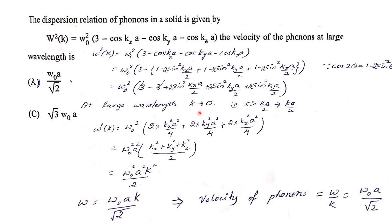As λ increases, k → 0, so sin(ka/2) ≈ ka/2. Therefore ω²(k) = ω₀² · 2 · [kx²a²/4 + ky²a²/4 + kz²a²/4] = ω₀²a²(kx² + ky² + kz²)/2 = ω₀²a²k²/2.